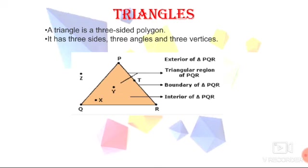Which are the three sides here? Side PQ, QR and RP. So it is having three sides. Which are the three angles here? Angle PQR, angle QRP and angle RPQ. And three vertices are P, Q and R. Hence we say that a triangle is a three-sided polygon which has three sides, three angles and three vertices.